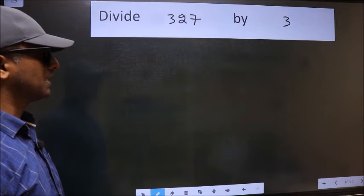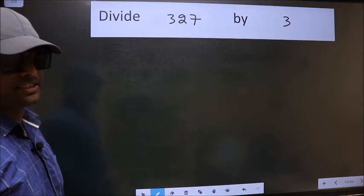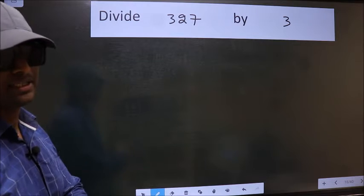Divide 327 by 3. To do this division, we should frame it in this way.